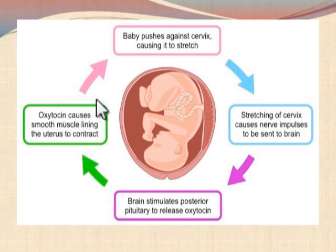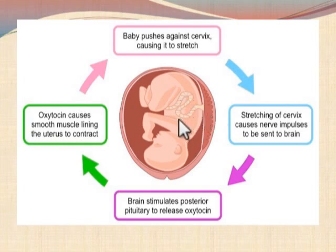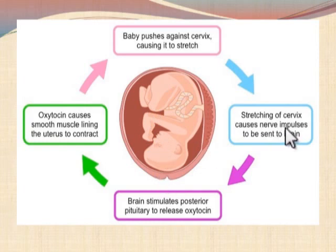Oxytocin comes and causes contraction of the smooth muscle cells of the uterus to help in the labor process. As the uterus contracts, the baby causes more and more stretching of the cervix, which causes release of more oxytocin — this is a positive feedback mechanism. After the baby is delivered, this feedback cycle will stop. This is how oxytocin helps in the last stage of labor.